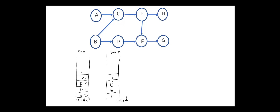Next, we can pick any node, for example B. B has two children, C and D. C is not visited, so we insert it in the set. C has one child, E, but E is already visited, so we can move C to the top of the stack. Next, we go back to B. B has another unvisited child, D. The only child of D is F, but F is already visited, so we can push D into the stack. Next, we go back to B. All the children of B are visited, C and D, so we can insert B in the stack.